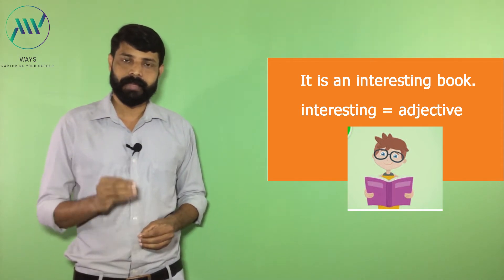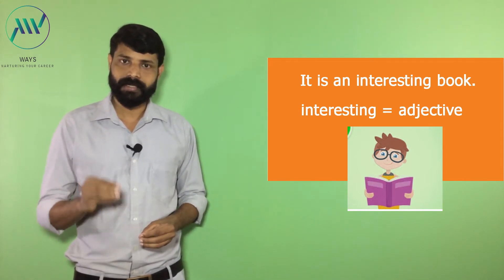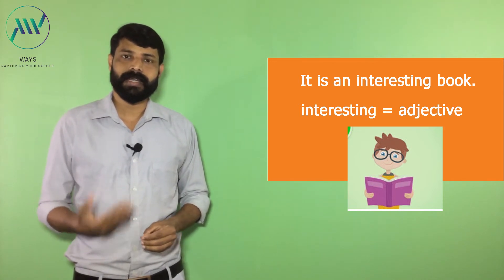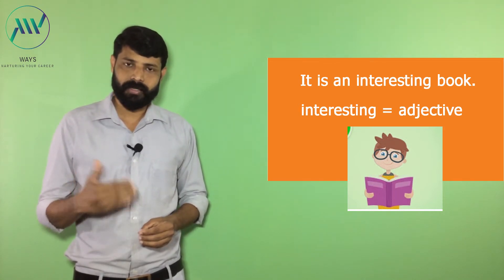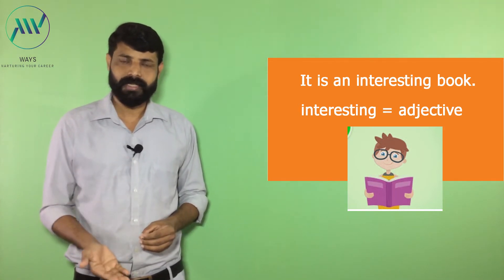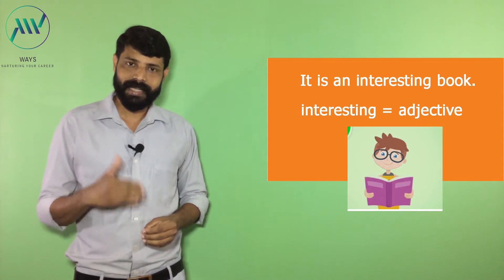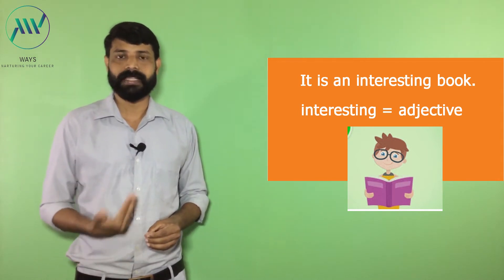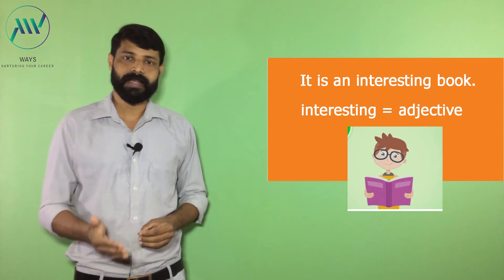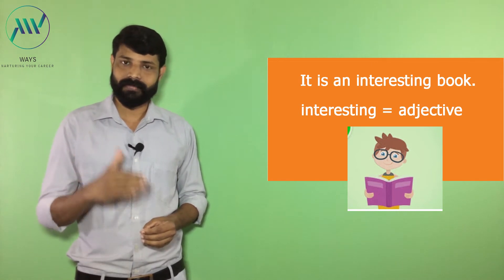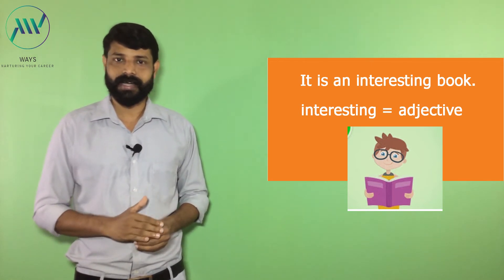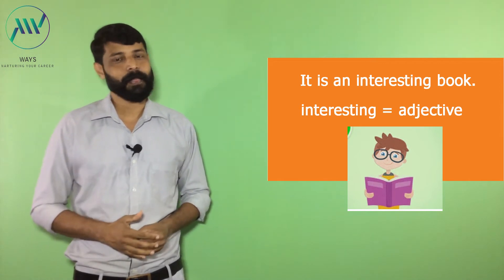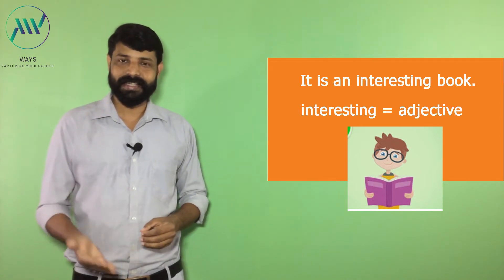We always use an article because of the singular countable noun, but we select which article based on the word placed nearest to the article. In the second example, we placed the word 'interesting' nearby the article, so we selected the article based on that word.